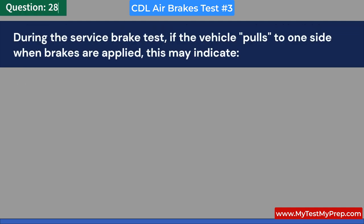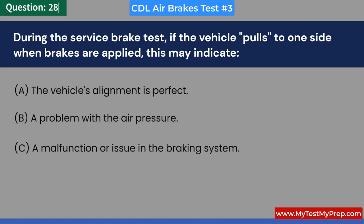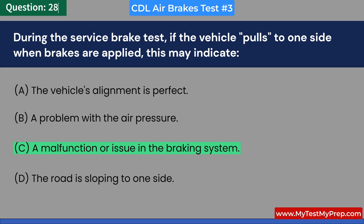During the service brake test, if the vehicle pulls to one side when brakes are applied, this may indicate: A. The vehicle's alignment is perfect. B. A problem with the air pressure. C. A malfunction or issue in the braking system. D. The road is sloping to one side. Answer: C. A malfunction or issue in the braking system.